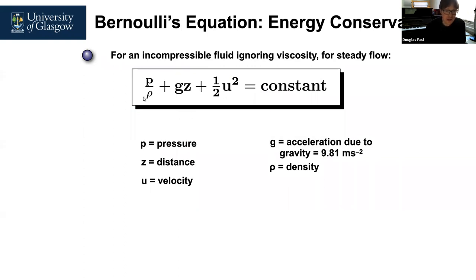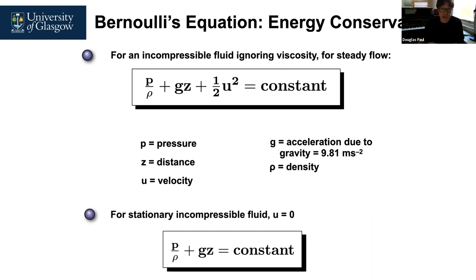The full form of Bernoulli's equation is: pressure divided by density, plus gravitational acceleration times height, plus one half times velocity squared equals a constant. We're assuming an incompressible fluid and ignoring viscosity — essentially fluid drag as it flows through a pipe or river. For stationary incompressible fluids, we set velocity u to zero, leaving just pressure over density plus gravitational acceleration times distance equals a constant.